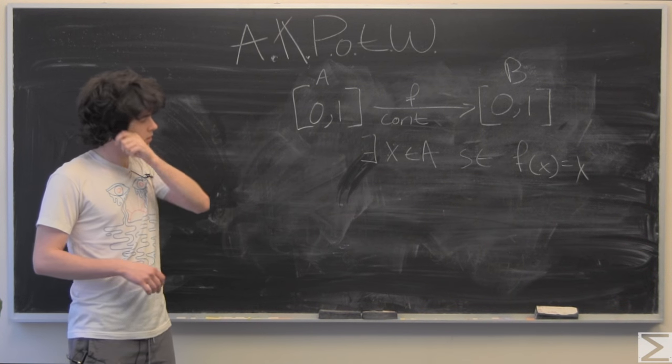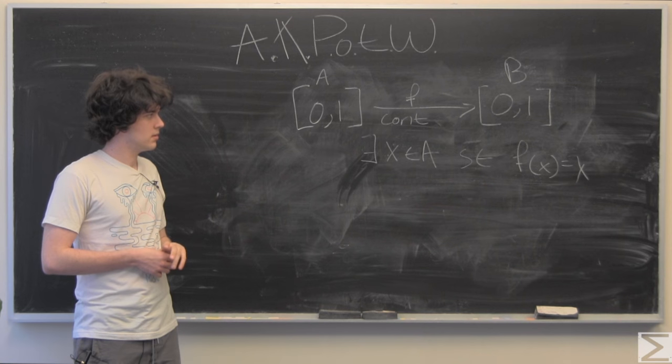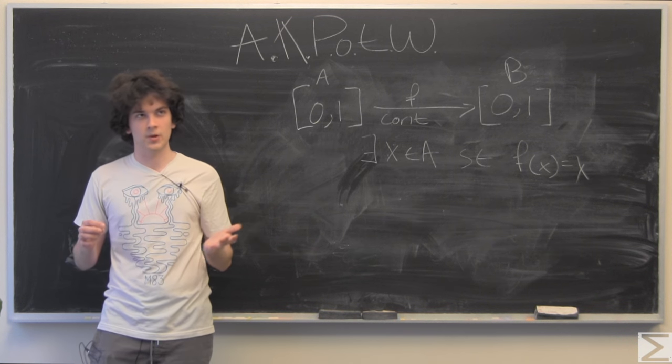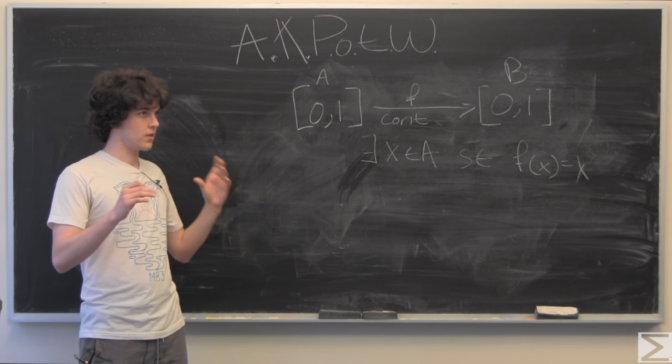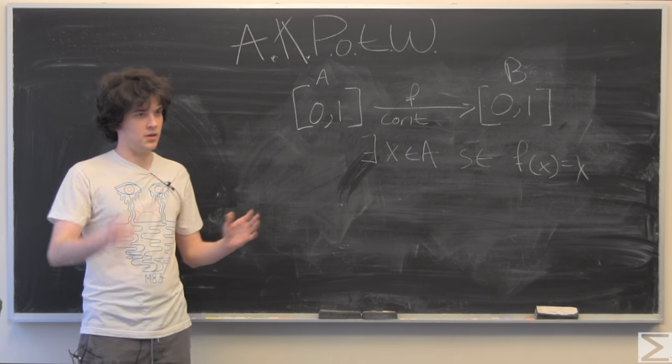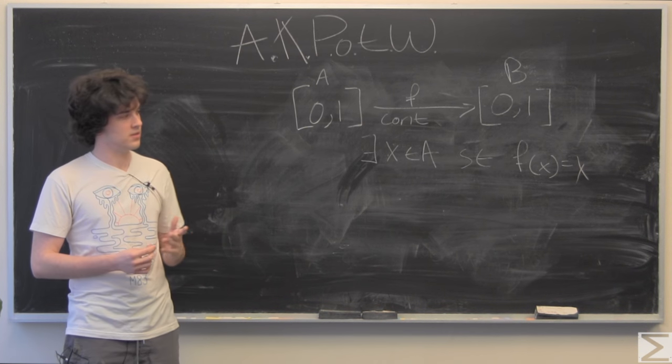So one thing that you might be looking for if you draw out a few arbitrary functions and imagine the unit interval on two axes is the intermediate value theorem.